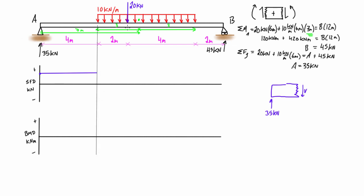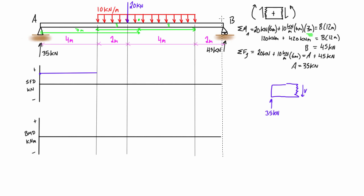We have a notable point where the distributed load begins, another where we have the point load, another at the end of the distributed load, and one at the end of the beam. The shear in the first region is going to be a constant 35 kN.